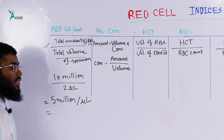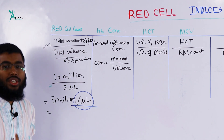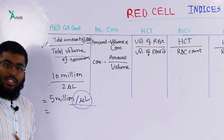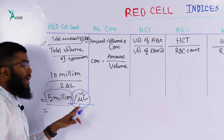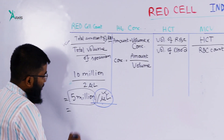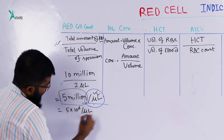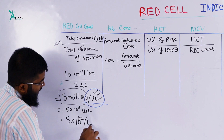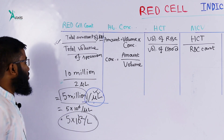The red cell count is 5 million per microliter, which equals 5 × 10¹² per liter. So this is the RBC International Count, with a normal value of 5 × 10¹² per liter.